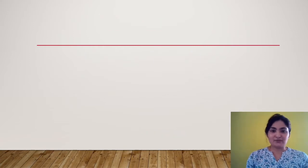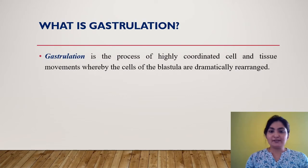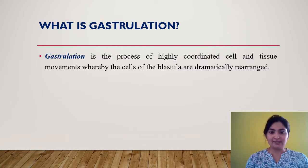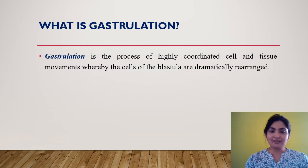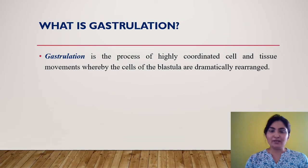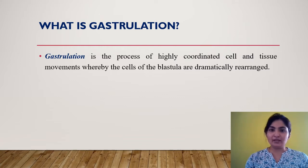Gastrulation is the process of highly coordinated cell and tissue movement whereby the cells of the blastula are dramatically rearranged. The gastrulation process is preceded by the blastula. The cells of the blastula are arranged in a specific manner but there is no cell movement. As soon as gastrulation initiates, the cells start moving from one place to another within the embryo. This movement is not random but very specific and well coordinated.